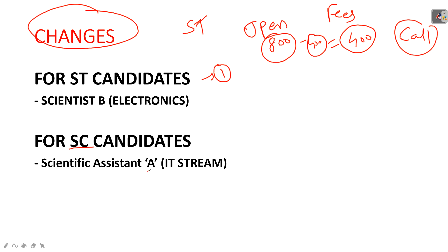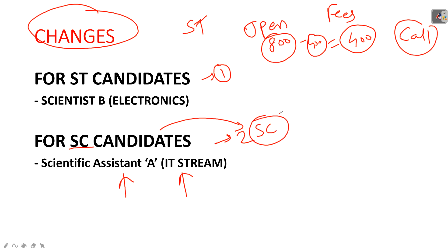Similarly, for SC candidates who have two vacancies in the IT stream: those who applied in December under Open category will automatically be considered in SC category. They should also ideally receive a 400 rupee refund. Call them and ask whether you will get the remaining amount or not. This applies to those who already applied in December.